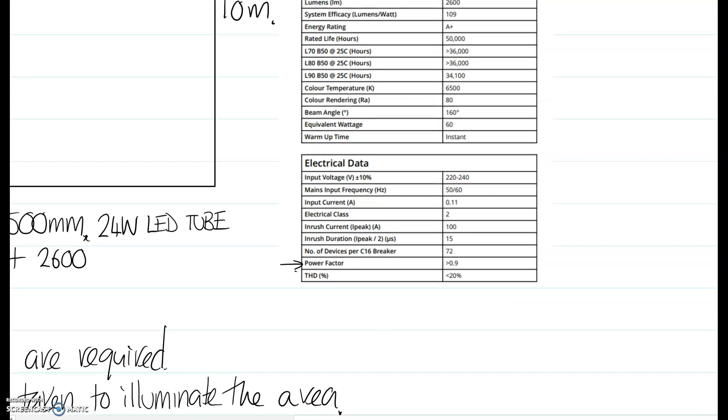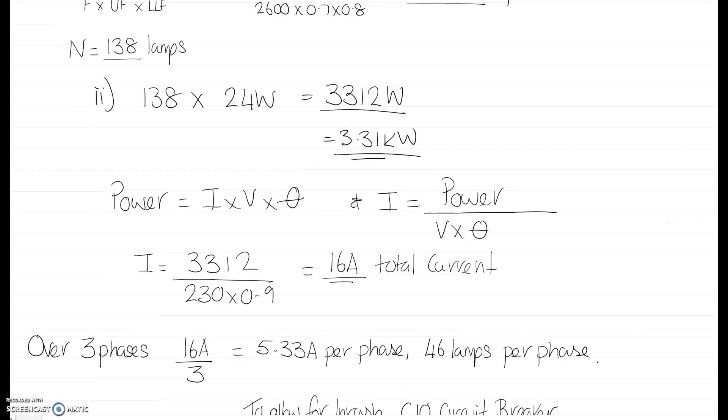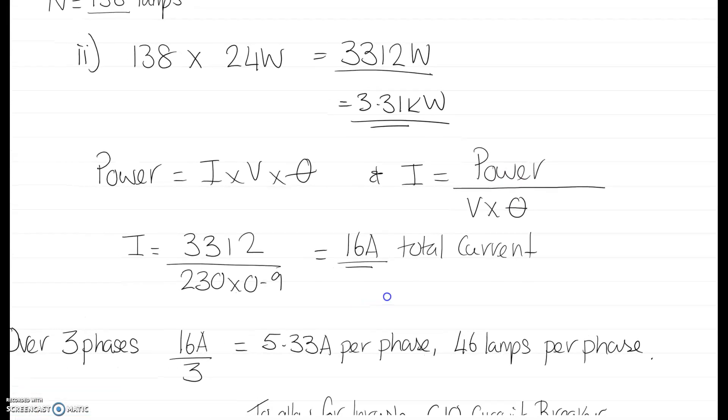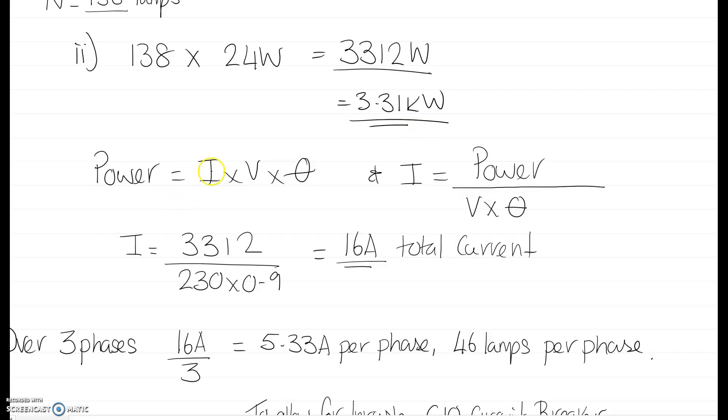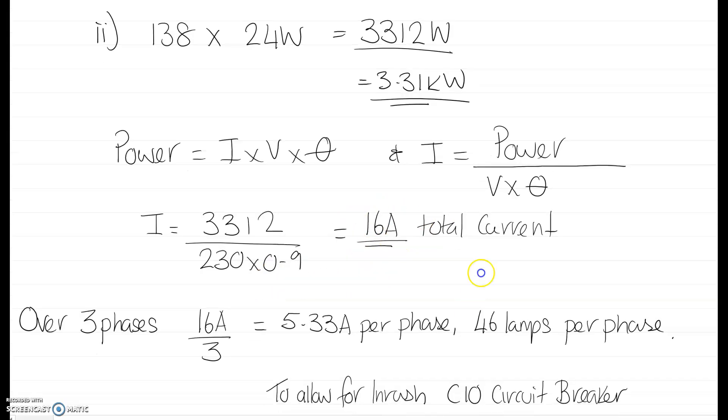Let's have a look and see how we can work out the current on this now. We know we've got 3.3 kilowatts total power. Power equals I times V times power factor. We're going to set the power factor at 0.9. We rearrange the formula for I. Power is divided by volts times power factor, so there's 0.9 worst case scenario, and we get a total current of 16 amps.